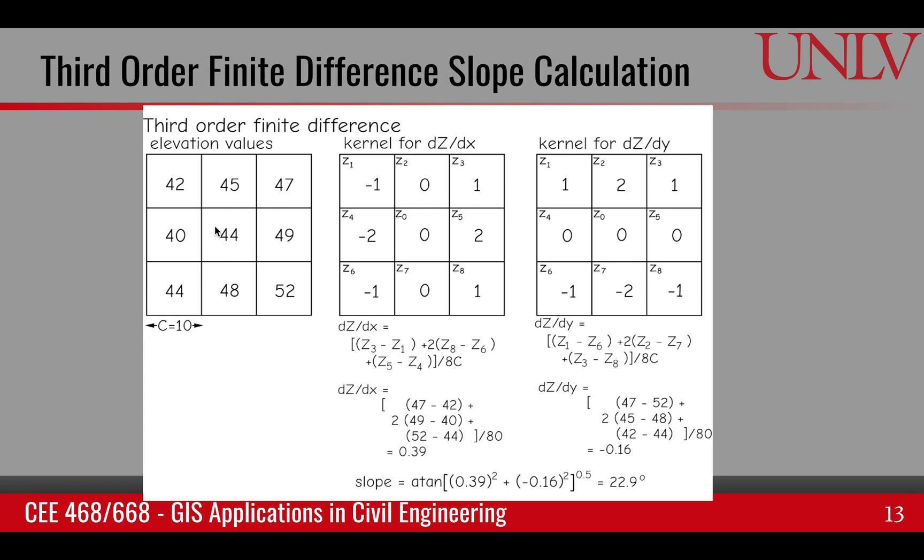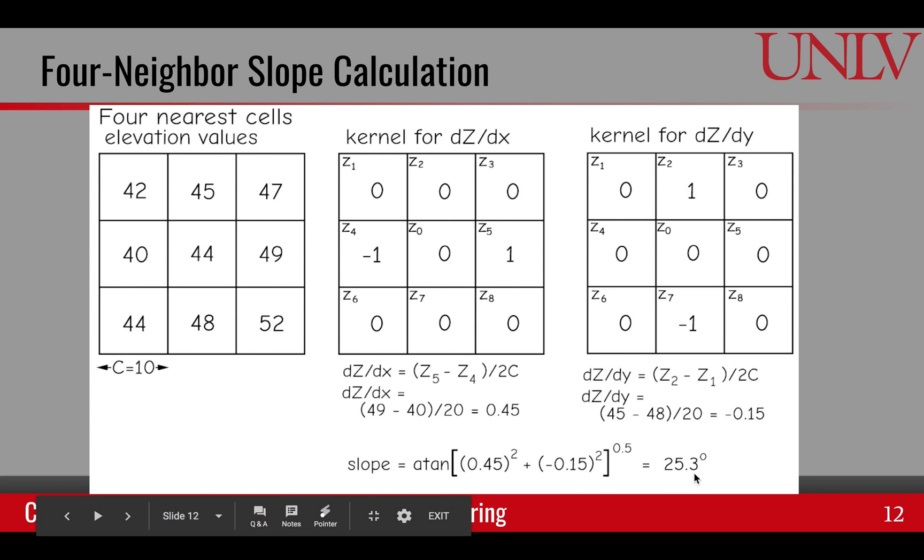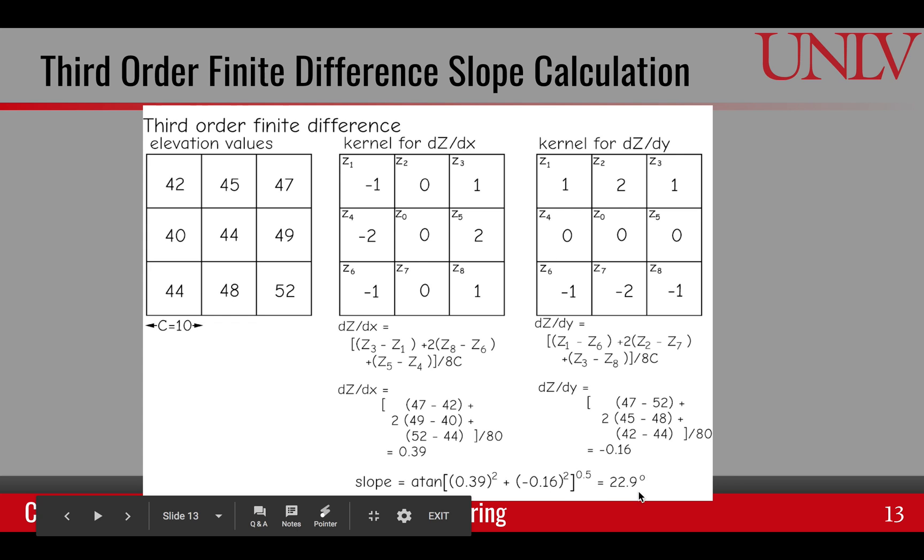We are using the same data in the two approaches. And in this approach, if we follow, find the dz/dx using these two methods, and then find the slope, we get 22.9 degrees. As you can see, that different approaches give different values, but they are close enough. 25.3 degrees, 22.9 degrees. This one is computationally a little bit more intensive than the four-neighbor method. But at the end, we get an estimate of pixels.